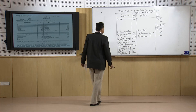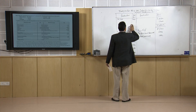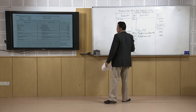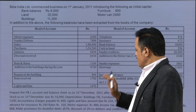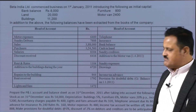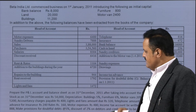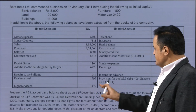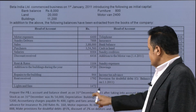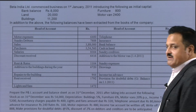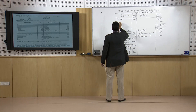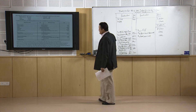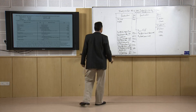We are continuing with sundry expenses. Now, this information is almost fully exhausted — nothing is left here, but some of this information is still left. For example, the stock on trade we have taken, but the depreciation we have not taken. We will have to calculate the depreciation for the different assets. First, depreciation on buildings is 5 percent.